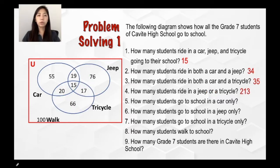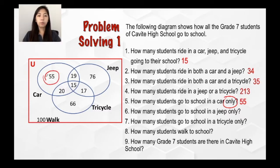For the fifth question, how many students go to school in a car only? This question made use of the word 'only'. So in that case, looking into the set of car, you're going to look at the numbers without the intersection at all, which in this case is 55. So there are 55 students who go to school in a car only.